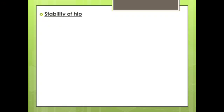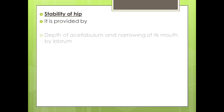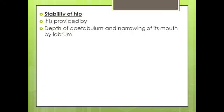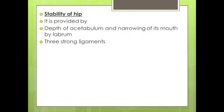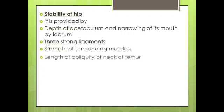Hip joint is unique in having a high degree of stability as well as mobility. The stability of the hip joint is provided by several factors: first, the depth of acetabulum and narrowing of its mouth by the acetabular labrum; then the three strong ligaments that strengthen the joint capsule — iliofemoral, ischiofemoral and pubofemoral ligaments; then the strength of the surrounding muscles; and finally, the length and obliquity of the neck of femur.